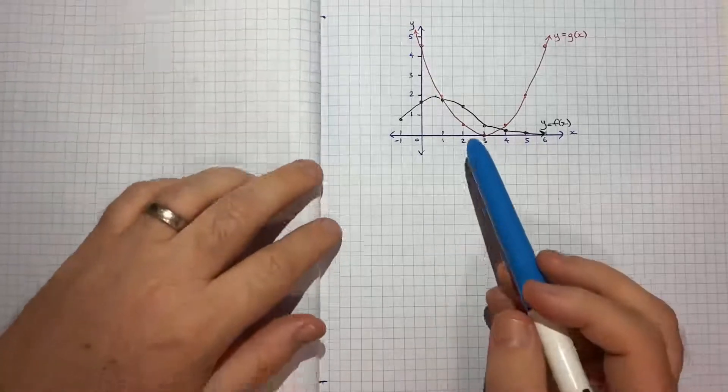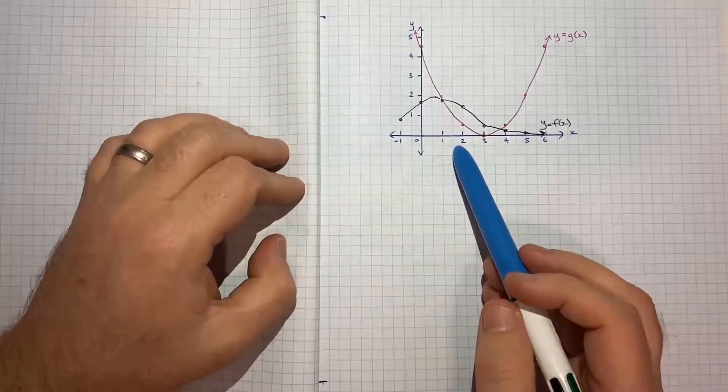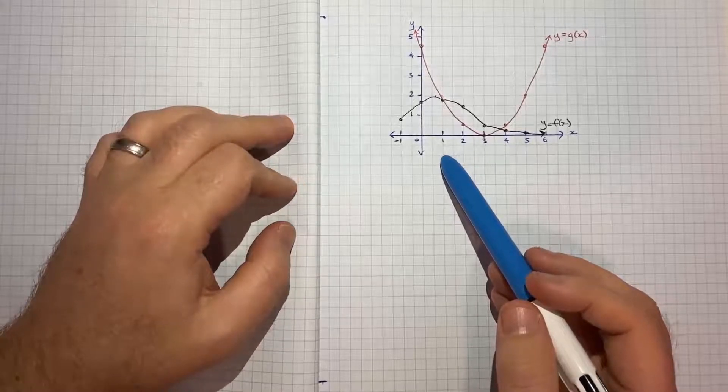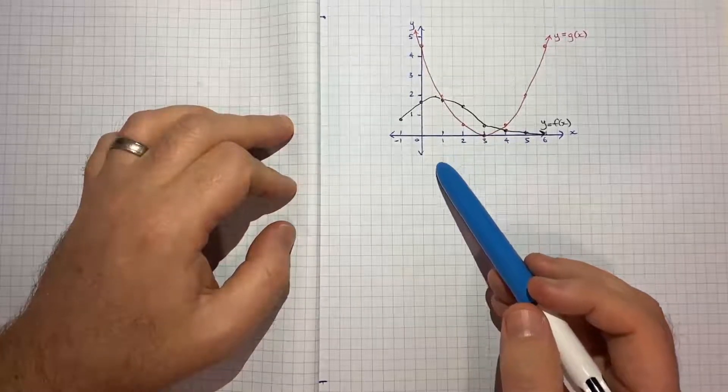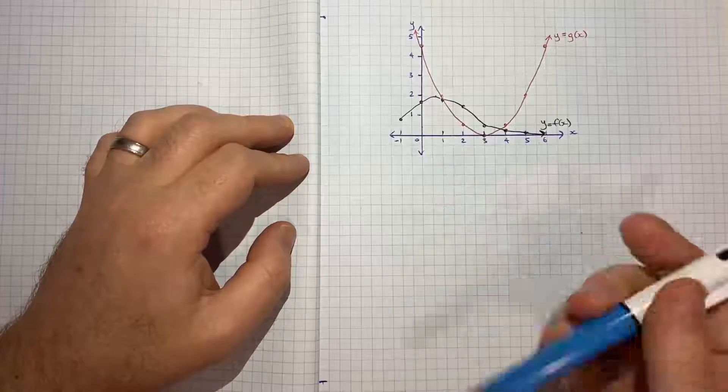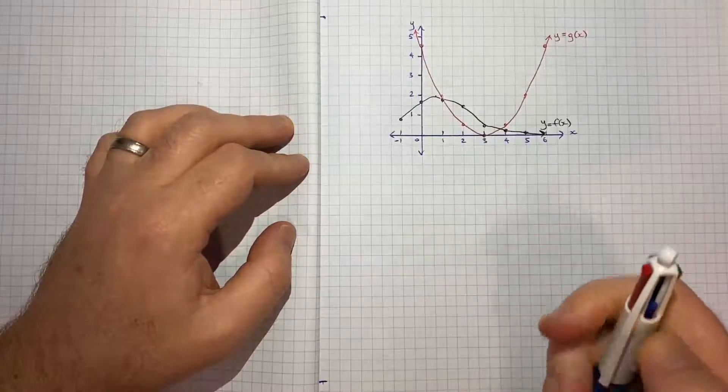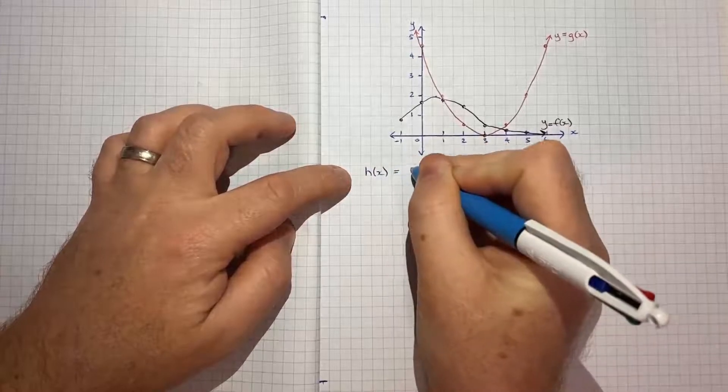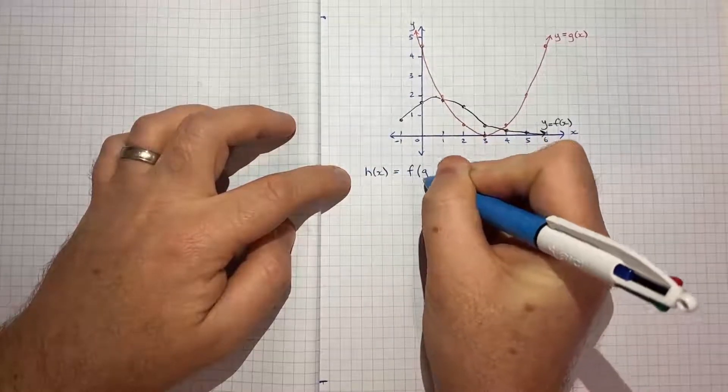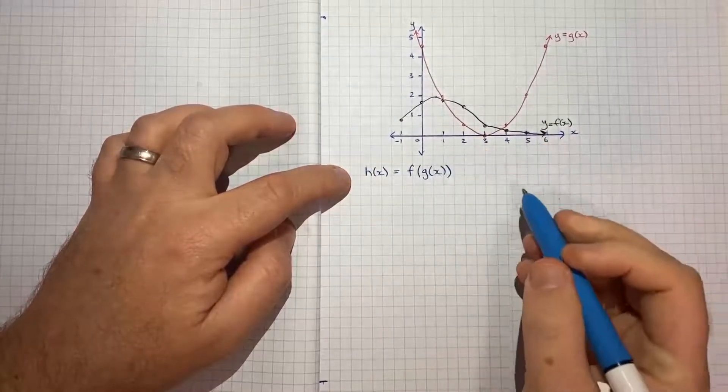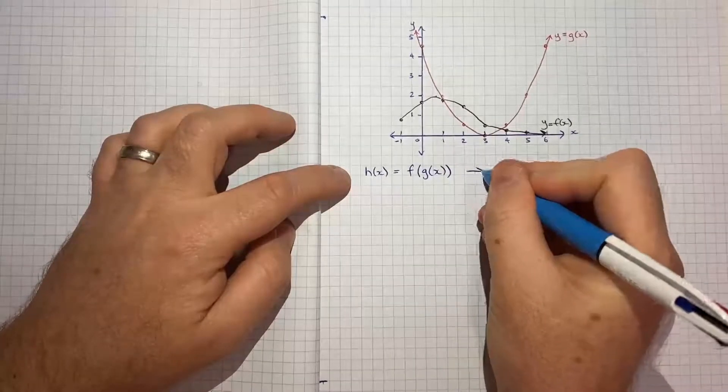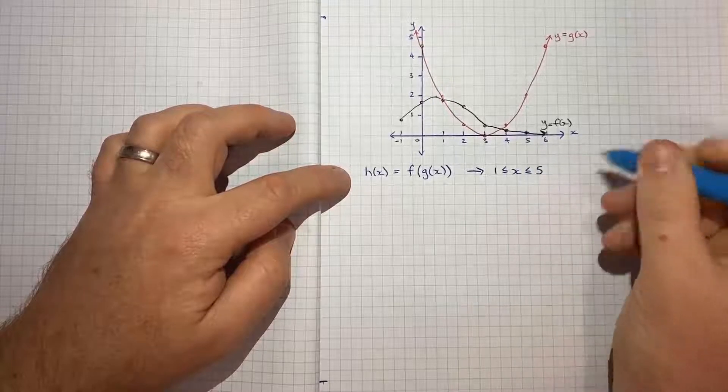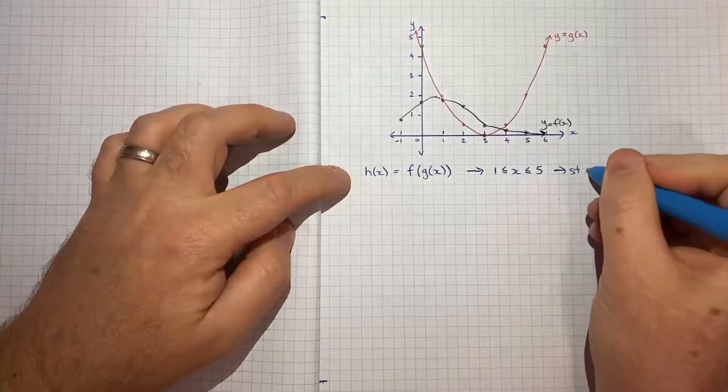So to help I've drawn up a version of the diagram here. It's probably not perfect but it's probably close enough to kind of get what we need to get. So as the question said we've got this new function h of x which is the composite of f g of x. And we're told that we're really concerned between x being between 1 and 5 and we're looking for the stationary points.